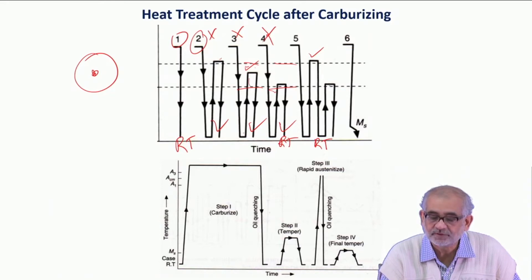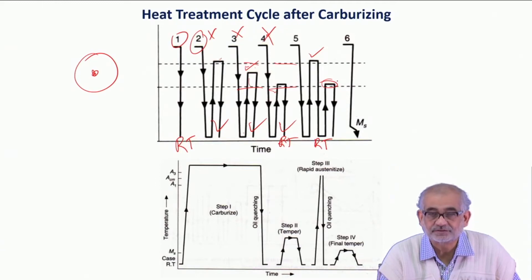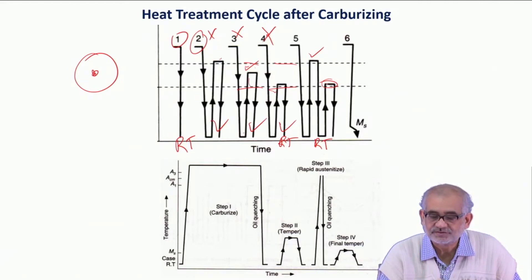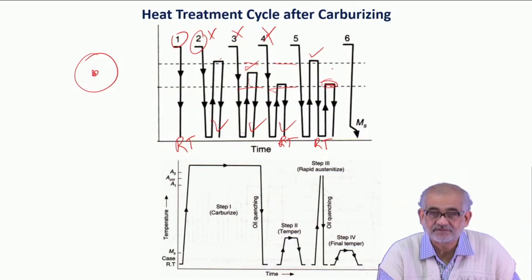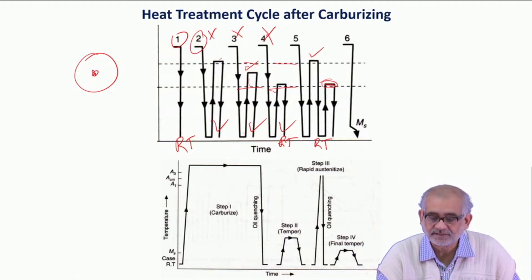We reheat only above AC1 because the microstructure here is hyper-eutectoid - 0.8 and above. This does not require heating above ACm; it requires heating only above AC1, and from just above AC1 temperature we need to quench.